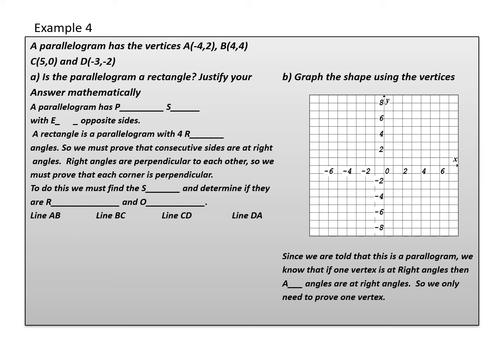First, what do we know about a parallelogram? A parallelogram is a four-sided shape with parallel sides and equal opposite side lengths. A rectangle is actually a special type of parallelogram that has four right angles. So in order to prove that this is a rectangle, I must prove that the angles are right angles, or that they meet at 90 degrees. Right angles are perpendicular to each other, so I have to prove that the corners are perpendicular by finding the slopes of the lines and checking if they are reciprocal and opposite.